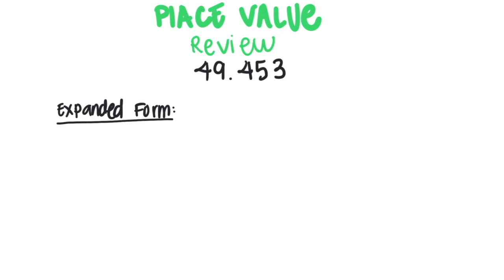First we're going to start with our place value review one more time. If I have the number 49 and 453 thousandths, how can I write this in expanded form? We think of powers of 10.